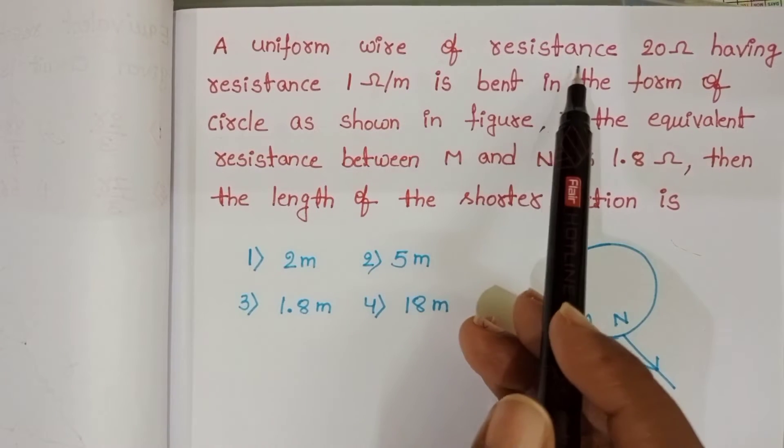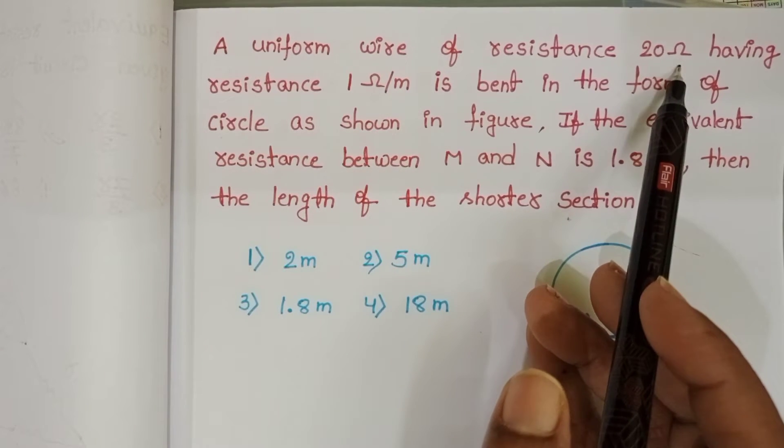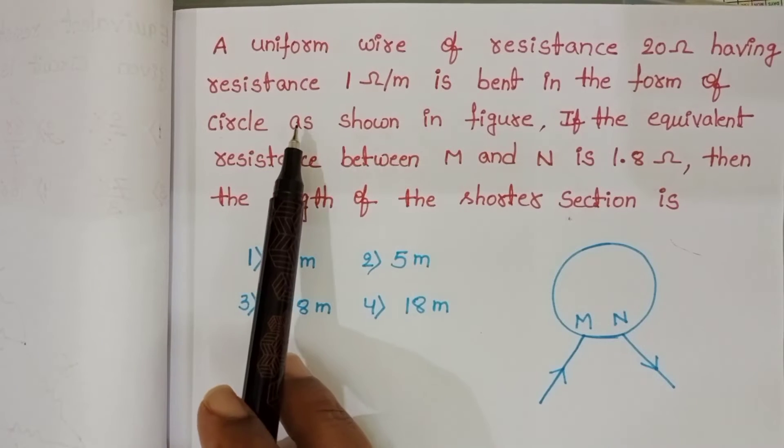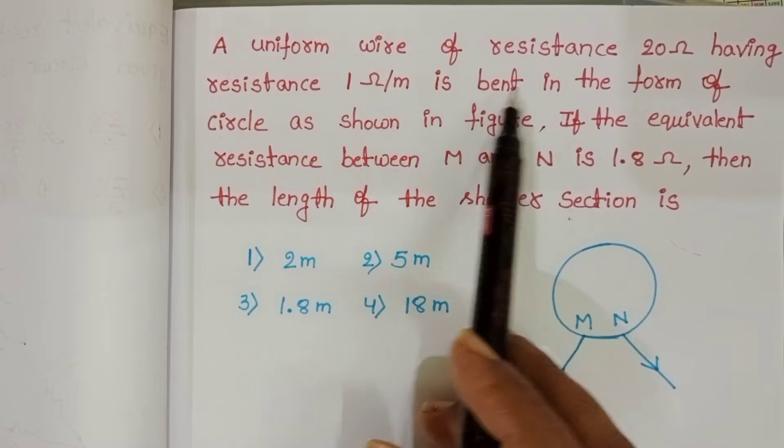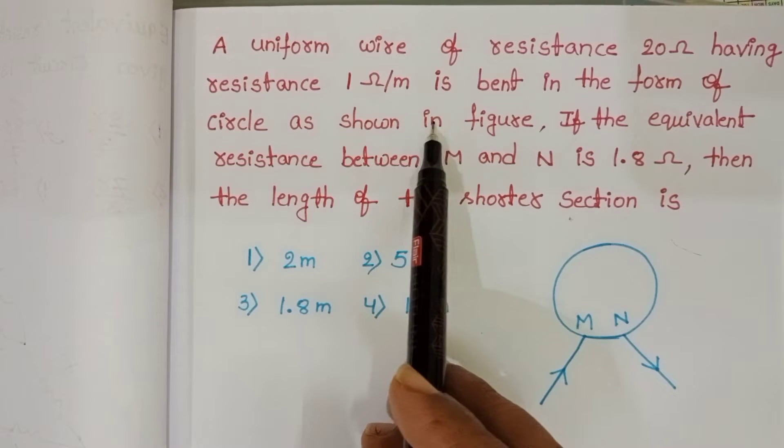A uniform wire of resistance 20 ohm having resistance 1 ohm per meter is bent in the form of a circle as shown in the figure.